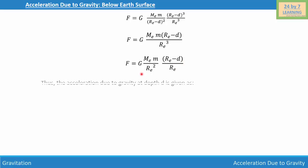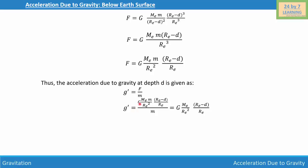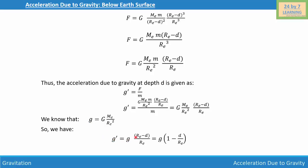The acceleration due to gravity below the earth's surface at depth d is g' = F/m. Substituting and cancelling m, we get g' = [G·m_e / r_e^2] · [(r_e minus d) / r_e]. Since G·m_e / r_e^2 equals g, the acceleration due to gravity at the earth's surface, we replace it to get g' = g · (r_e minus d) / r_e.